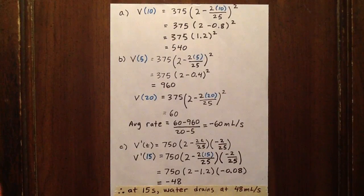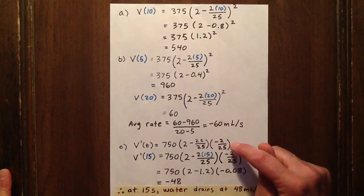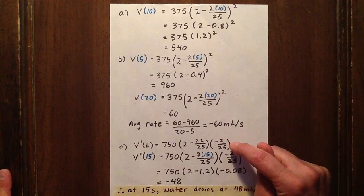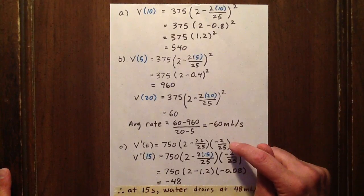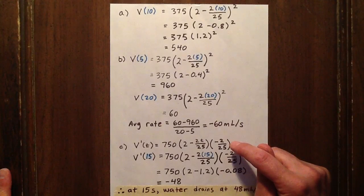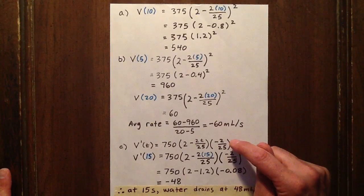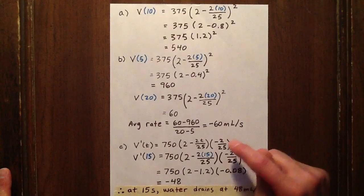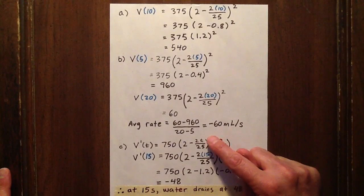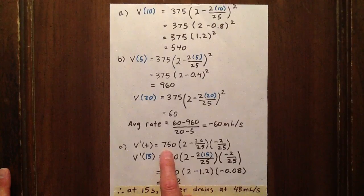Instantaneous rate of change means to find the derivative. So if V(T) equals 375 times (2 minus 2T over 25) squared, then we can take the 2 on the bracket, multiply it by 375 giving us 750, times the expression in the bracket to the exponent 1.